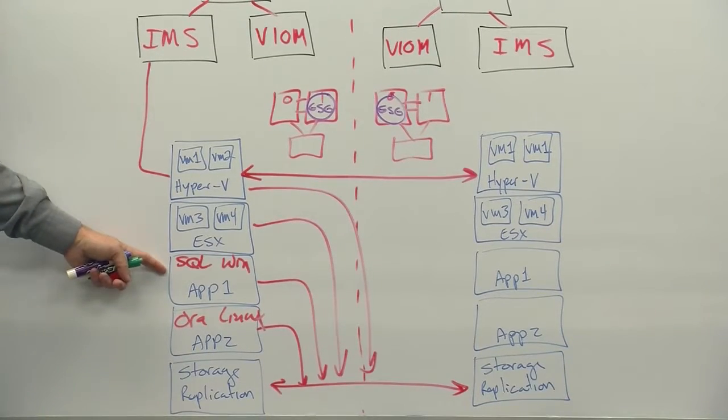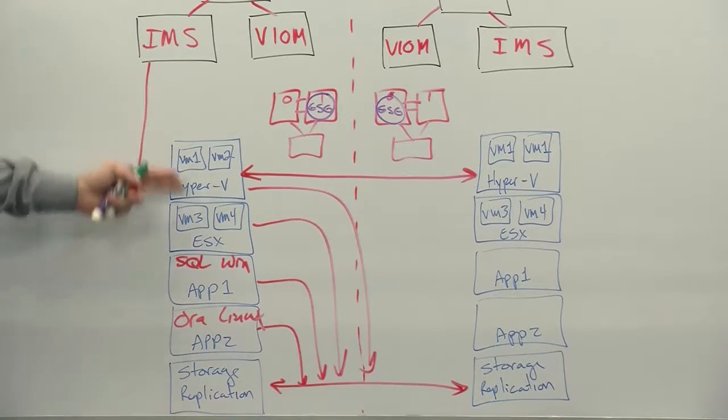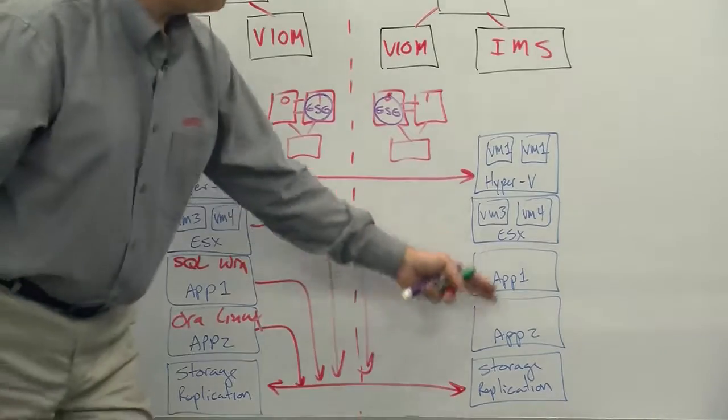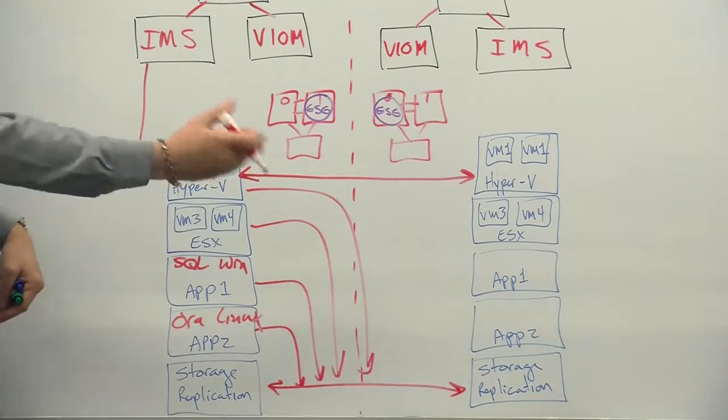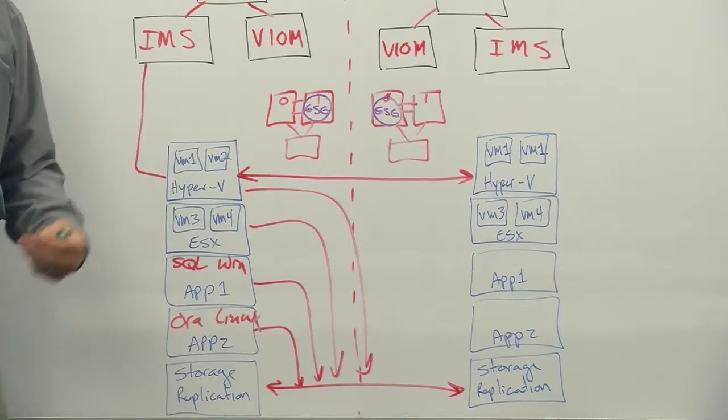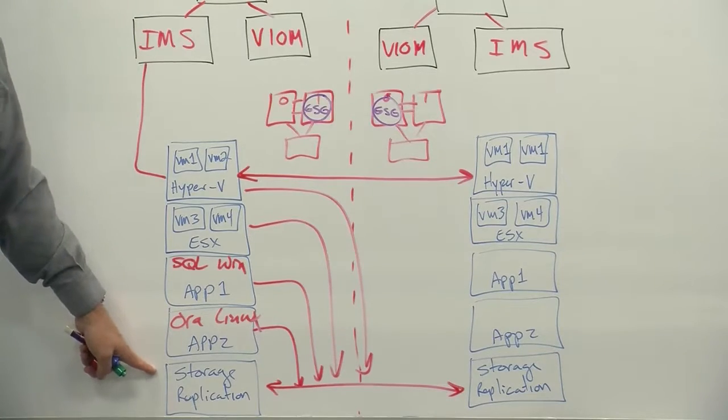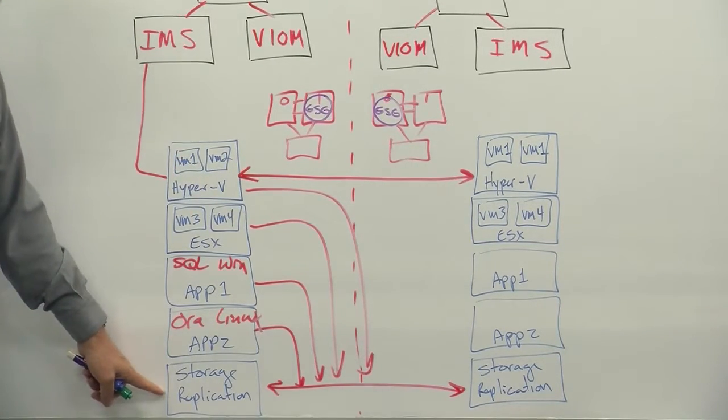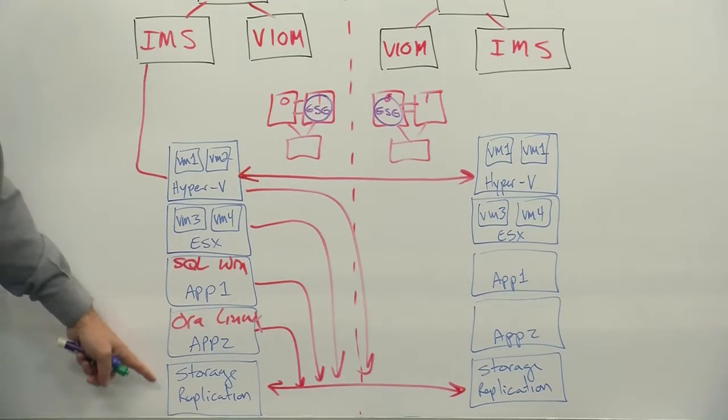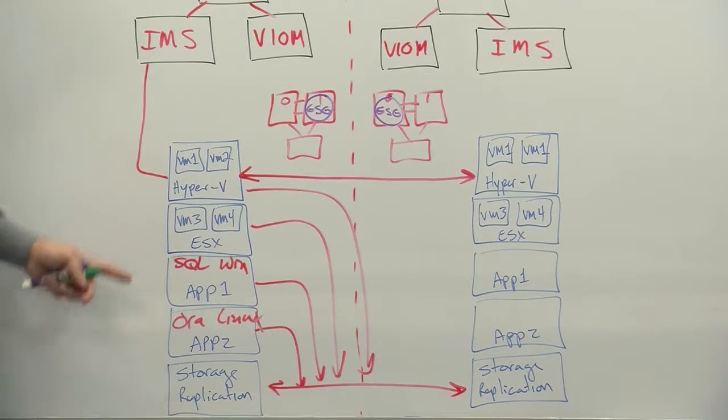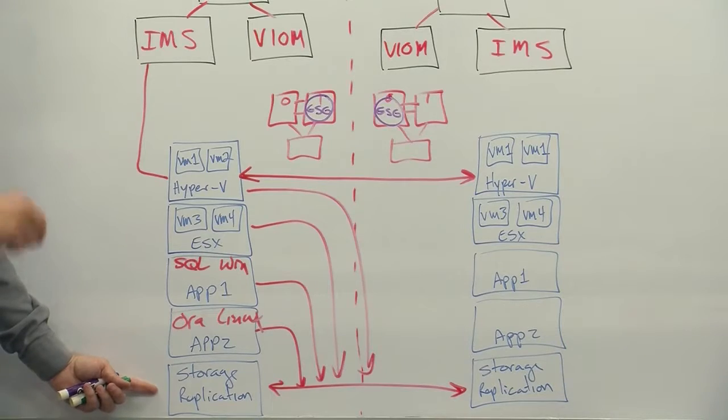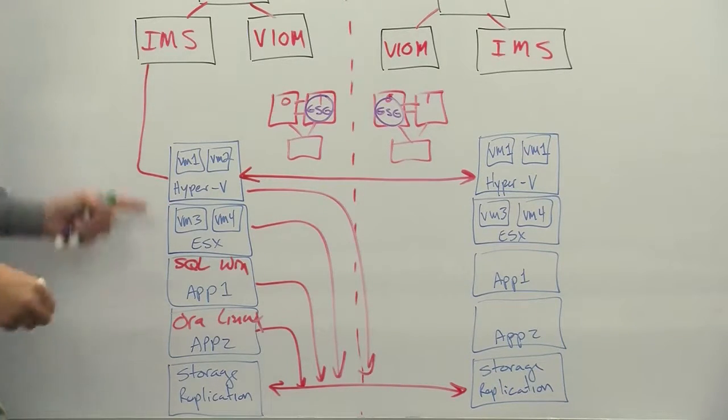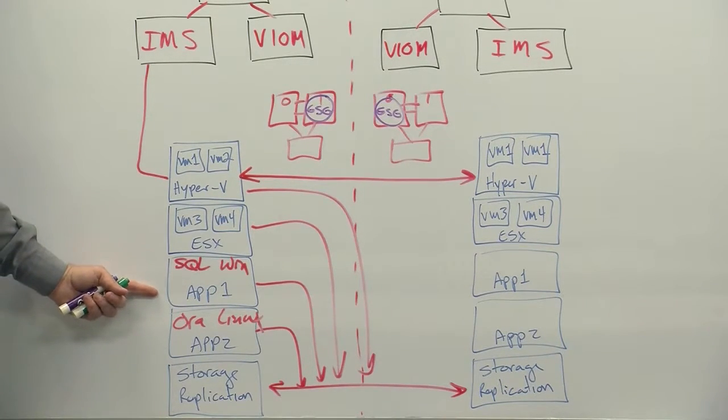And of course, in order to have a migration where we're going to shut these components down and start them up at the other side, we must have replication and a way to manage that replication. So part of our asset discovery is to discover the replication that's associated to our applications that are associated to our virtual machines. We don't actually say the storage piece is an asset, or assets, or virtual machines, or applications.